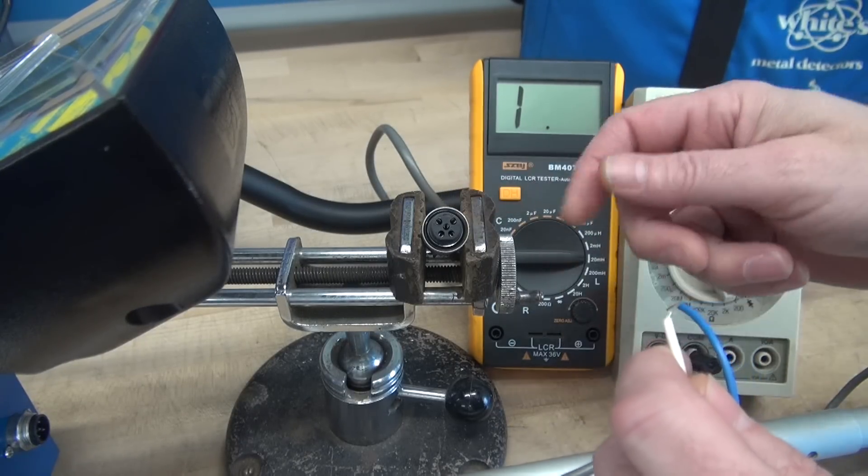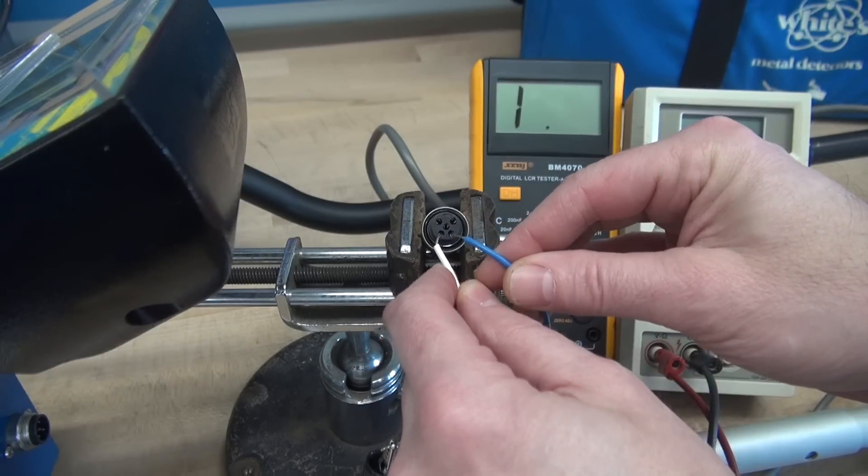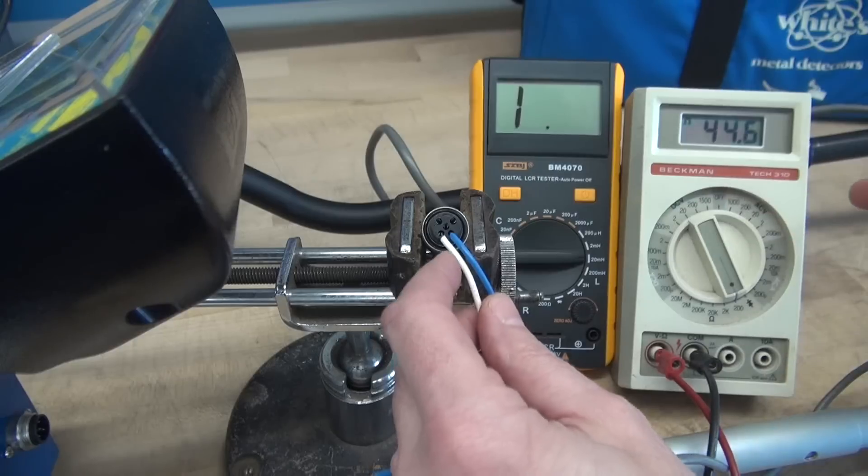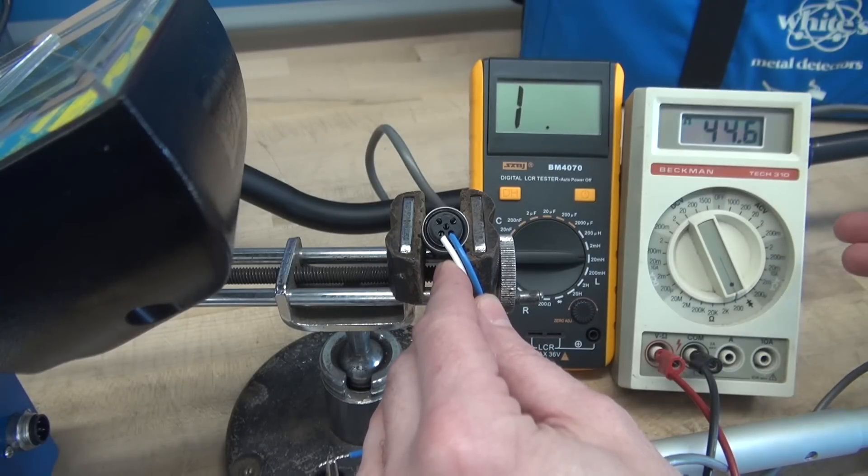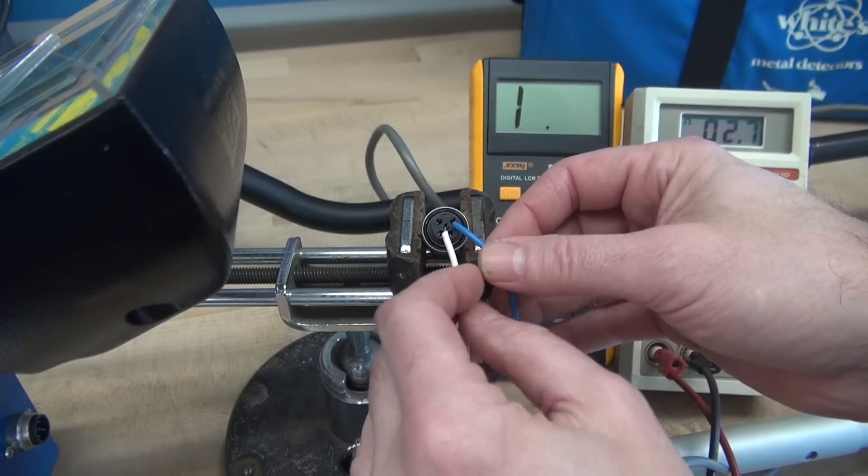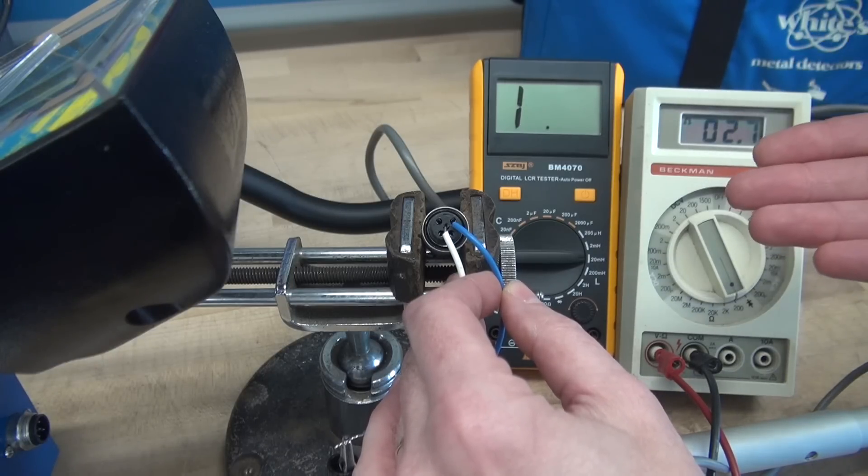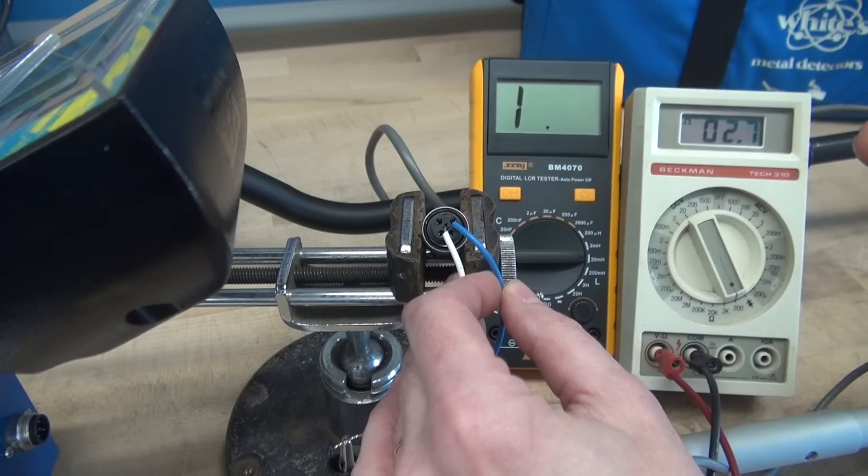So here's the cable that's going to the MXT Pro's search coil. We're going to go pins one and two again. We're back on the ohm meter. Pins one and two are the receive coil, and you see we've got about 44 and a half ohms. So now let's go to pins four and five—that's the transmit coil. You can see that's 2.7 ohms, so there's a big difference between this coil and the 5900's coil. But remember, the MXT runs at 14 kilohertz, whereas the 5900 is about 6.5 kilohertz.